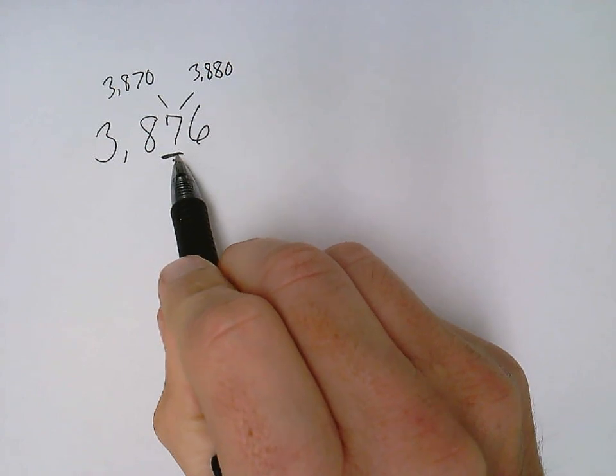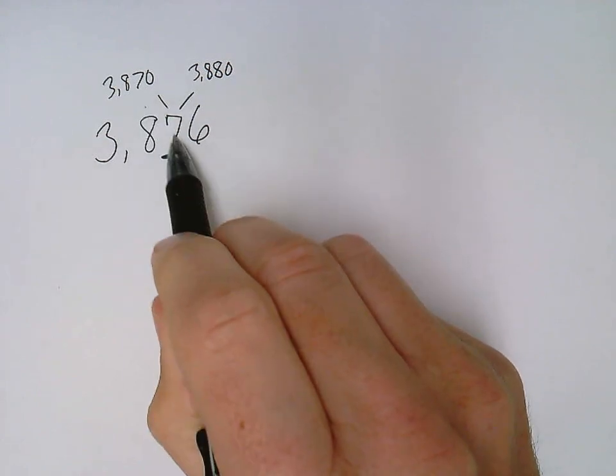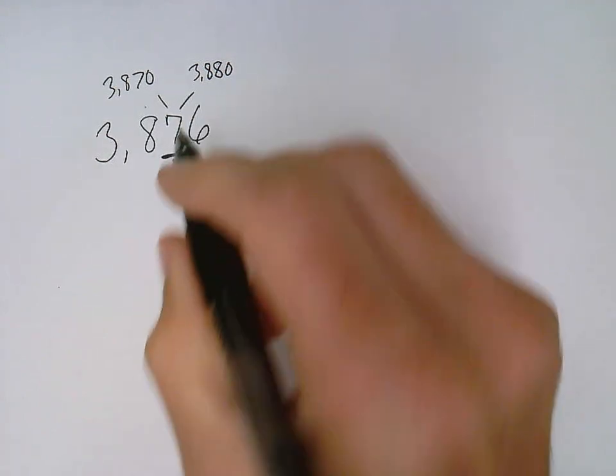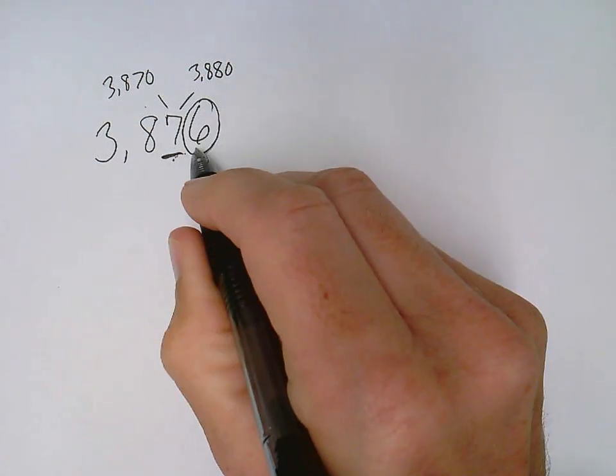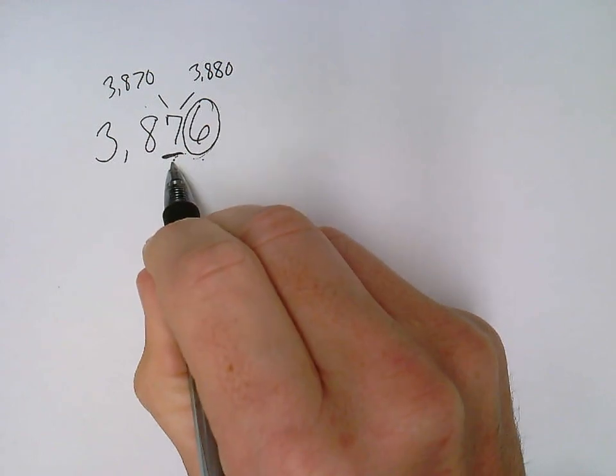To figure out if my tens place stays the same, or if my tens place goes up, I'm going to look at the digit next to my underlined digit. I circle that one. The circle digit tells the underlined digit what to do.